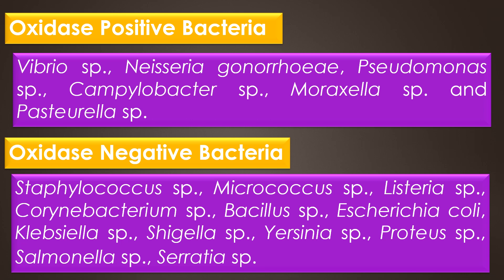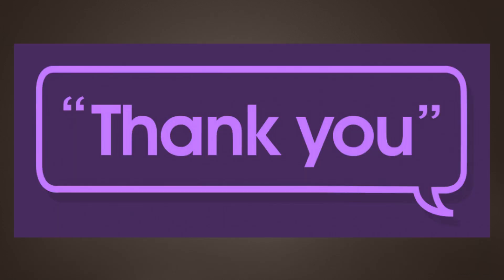Examples of oxidase positive bacteria are Vibrio species, Neisseria gonorrhoeae, Pseudomonas species, Campylobacter species, Moraxella species, and Pasteurella species. Examples of oxidase negative bacteria include Staphylococcus species, Micrococcus species, Listeria species, Corynebacterium species, Bacillus species, Escherichia coli, Klebsiella species, Shigella species, Yersinia species, Proteus species, Salmonella species, and Serratia species.